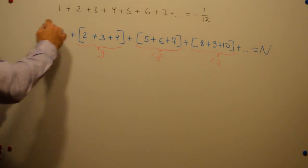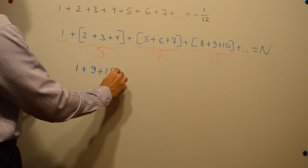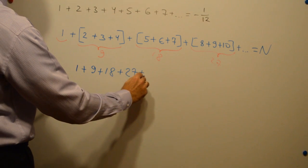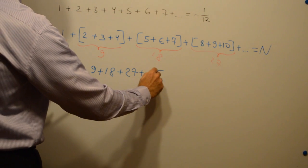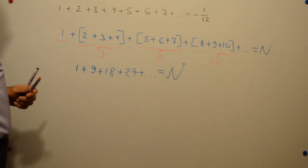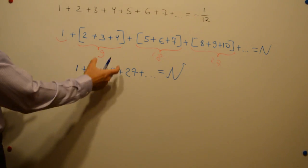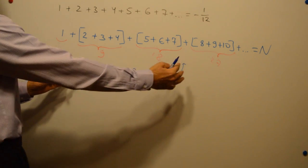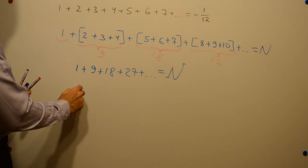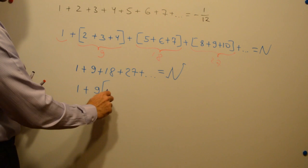So we can rewrite this expression as 1 plus 9 plus 18 plus 27 plus etc equals to let's say n as it is there. Now we can factorize this huge sum here and we can get 9 outside brackets.